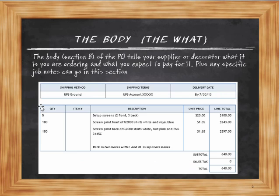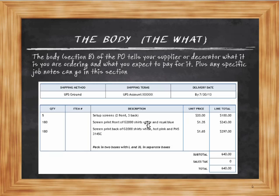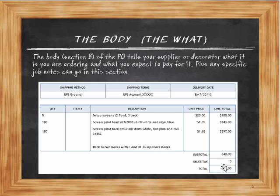Then we move on to the body, which is the what — the meat and potatoes of the PO. I put together a PO for a screen printing job: two color front, three color back. The first line item is screen setup — five screens at $20 a screen, so $100 in setup. Below that we've got a 180-shirt order. The second line covers the front of the shirt in white and royal blue, with a unit price and line total. The third line is again 180 shirts for the back — a three-color print with unit price and line total. There's also a note at the bottom: pack large and extra large in separate boxes. This tells me there's special packing to be done, which will be entered on the shop work order so staff knows what to do. Then we have the subtotal and total.